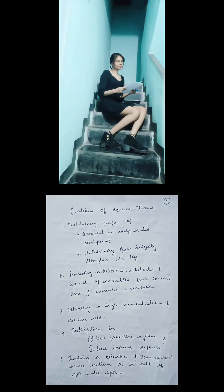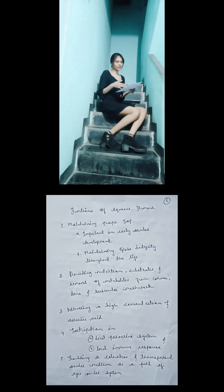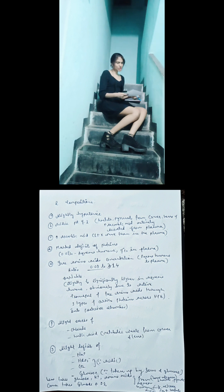Functions of aqueous humor: 1. Maintaining proper intraocular pressure, important in early ocular development to maintain the cornea and sclera, and maintaining globe integrity throughout life. 2. Providing nutrition, substrates, and removal of metabolites from cornea, lens, and trabecular meshwork. 3. Delivering a high concentration of ascorbic acid. 4. Participation in local paracrine signaling and local immune response. 5. Providing a colorless and transparent ocular medium as part of the eye's optical system.